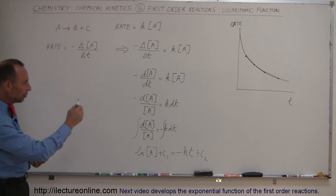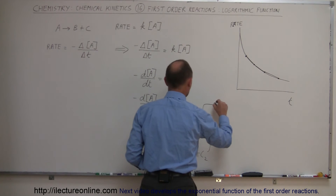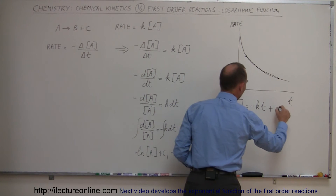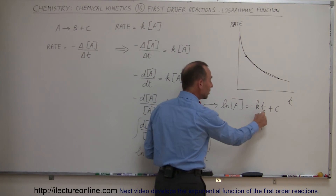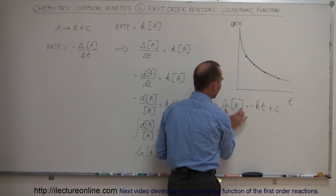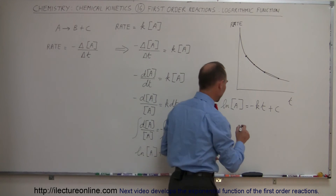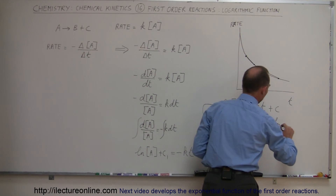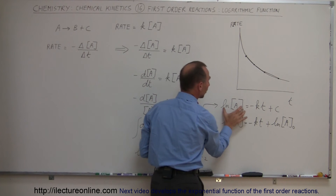We move both constants to the right side and combine them into a single constant C. So now we have: ln[A] equals negative K times T plus C. That constant C equals the natural log of the initial concentration of A when T equals zero — because at T=0, the K·T term goes to zero, leaving C equal to ln[A]₀. Therefore: ln[A] equals negative K times T plus ln[A]₀.